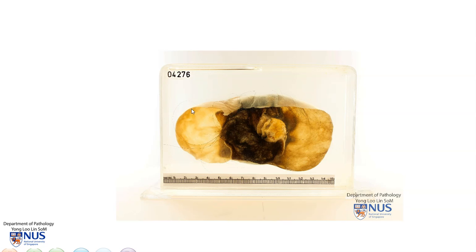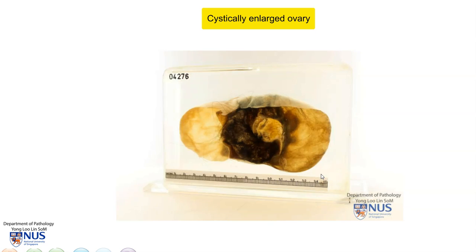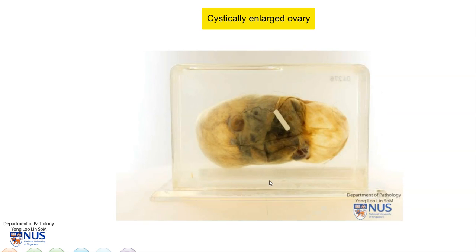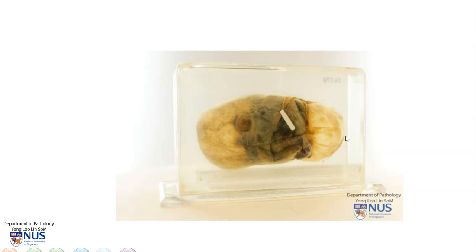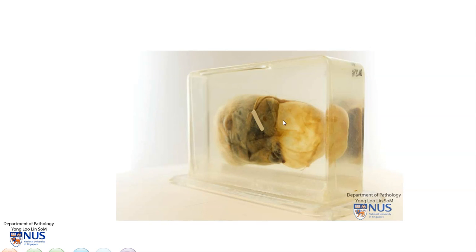Hello, this is a pathology specimen of an enlarged cystic ovary. We're looking at the cut surface here, and turning this around, this is the serosal surface — the outer or capsular surface — and we can see that it is quite smooth and there are no obvious masses on this surface.